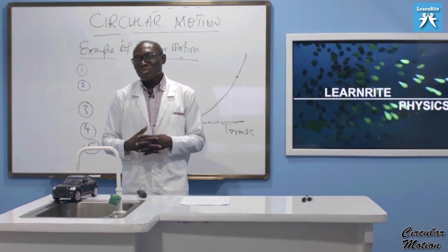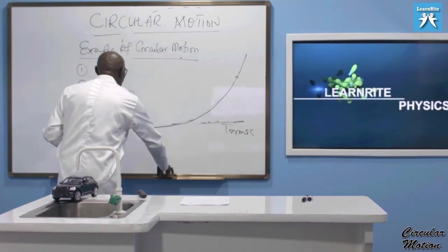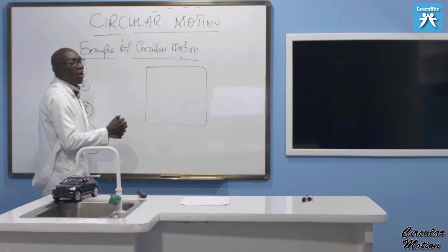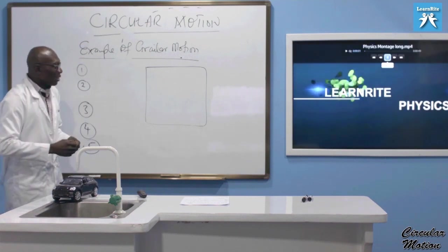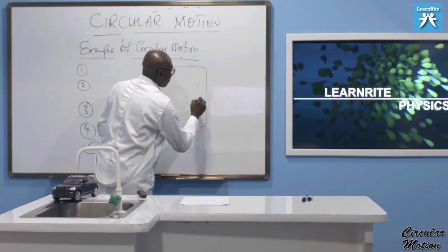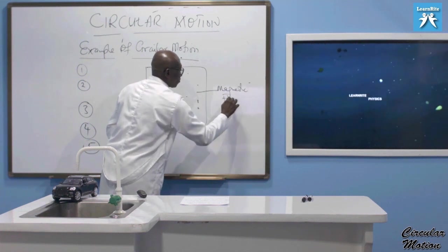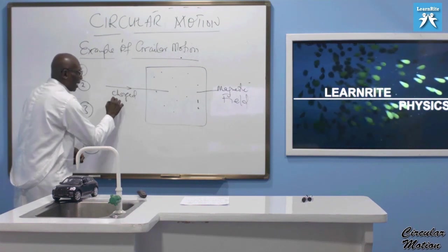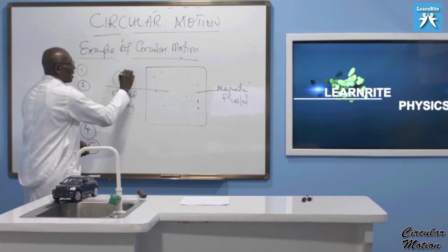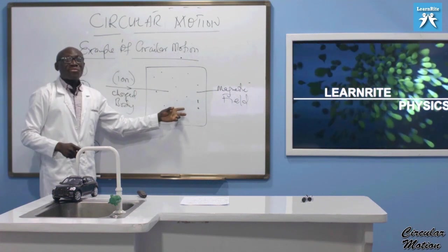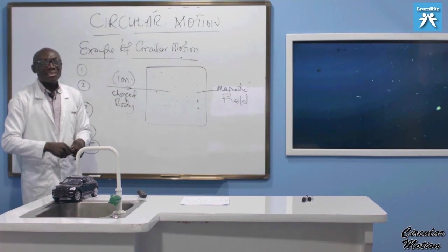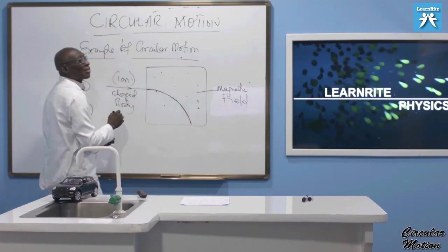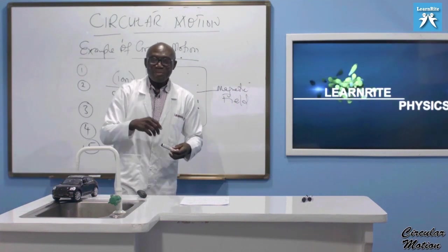If you happen to have an instrument called the mass spectrometer, this instrument has an area where there is a magnetic field. Any time a charged body — an ion — enters this area, the magnetic field exerts a force on it. What happens is that the ion takes a curved path, again performing circular motion.